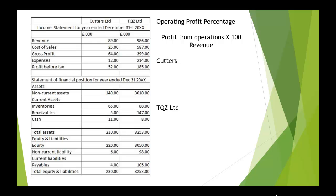So for our two companies: taking Cutters first, the profit from operations is 52, the revenue is 89, and that comes to 58.4%. And for TQZ Limited, the profit from operations is 185, the revenue is 986, and that comes to 18.8%. You can see again there's a considerable difference in those two figures.